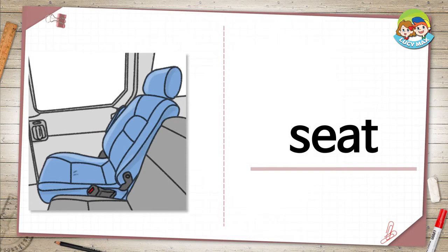The next word is seat. In the picture you see a blue seat. It's a place you sit. The seat is in the car. Where else do you see a seat?